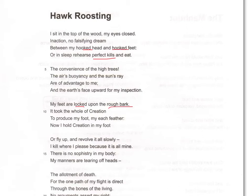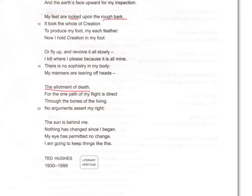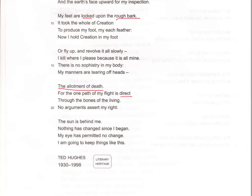If we look down here, we then have this brilliant oxymoronic metaphor of 'the allotment of death' — the idea that everything that grows is grown for the hawk's consumption. We associate allotments with generating food, giving things life so that they grow and feed us. The hawk is saying the same thing. 'For the one path of my flight is direct' — again, a very harsh sound — 'through the bones of the living, no arguments.' This is the arrogance; the hawk's complete self-assertion that nothing can get in its way. 'No arguments assert my right' — there is nothing to counter its assertion.